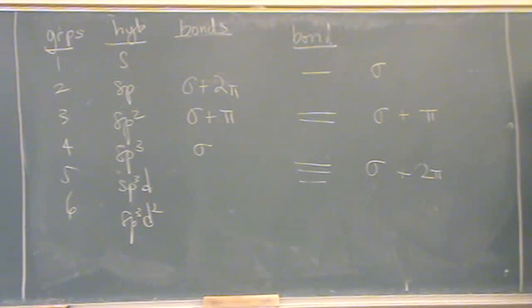So if you had a molecule with a double bond and a triple bond, it would be 2 sigma 3 pi?